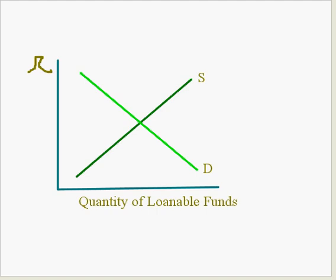And then on the vertical axis you have a cursive R, not a very good one, but a cursive R or real interest rates.